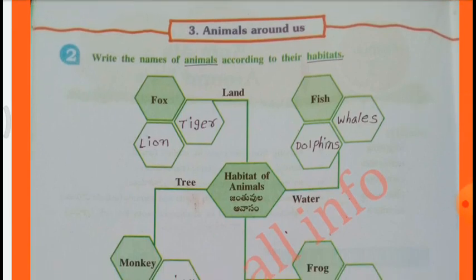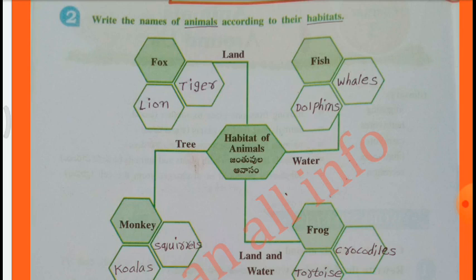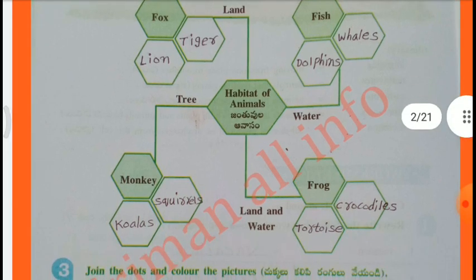2nd question: Write the names of animals according to their habits. Land: Fox, Lion, Tiger. Water: Fish, Whales, Dolphins. Tree: Monkey, Squirrels. Land and water: Frog, Crocodiles, Tortoise.